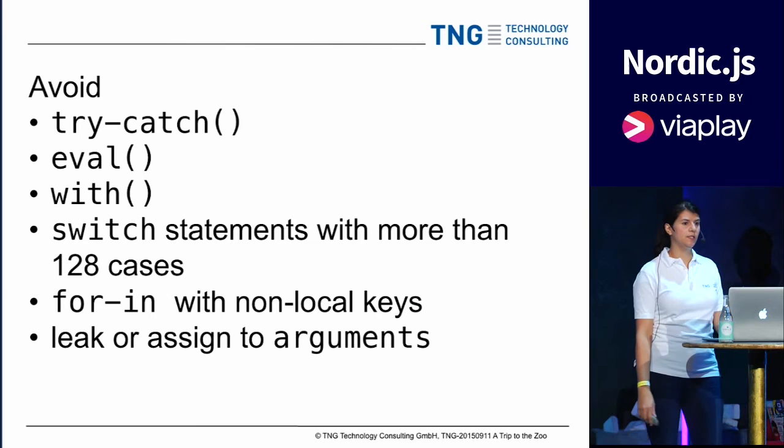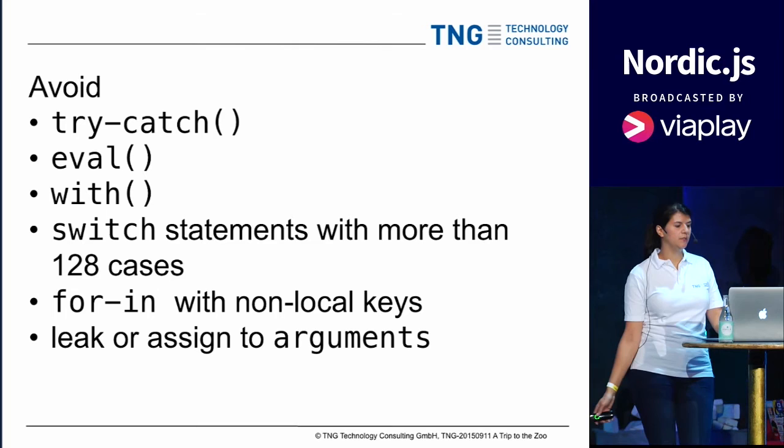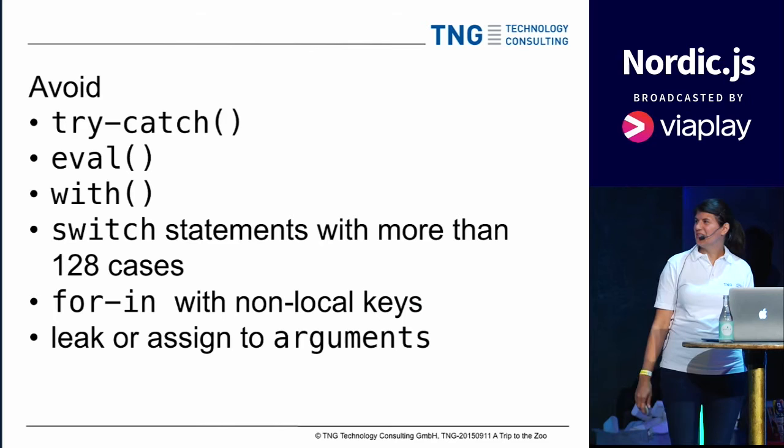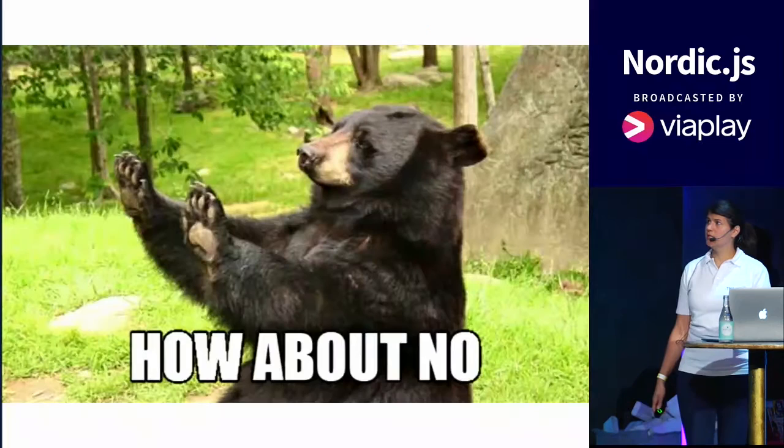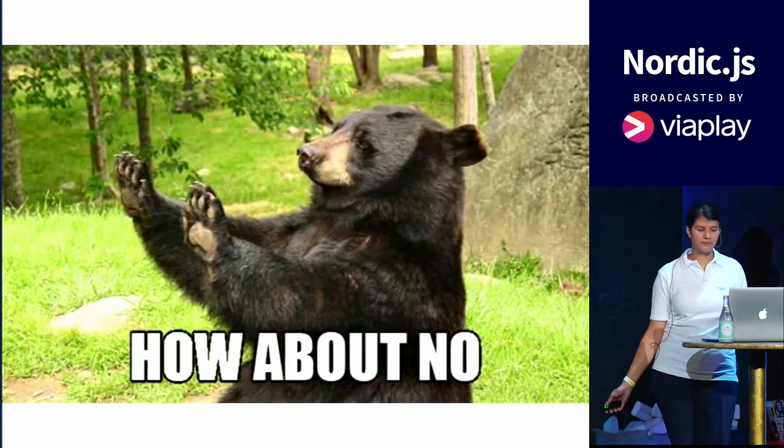Sadly, there are a few more things that compilers just can't optimize: anything with a try-catch, an eval, a 'with' statement, or a switch statement with more than 128 cases. Also in your for-in loops, make sure you keep your keys local — don't forget the 'var', otherwise it can't be optimized. And don't leak arguments or assign to them. Especially V8 just won't do it.